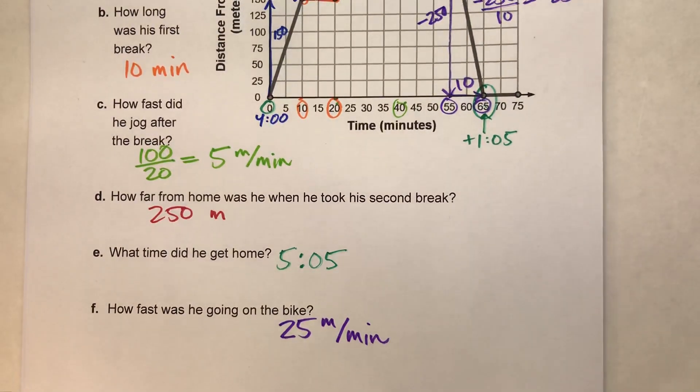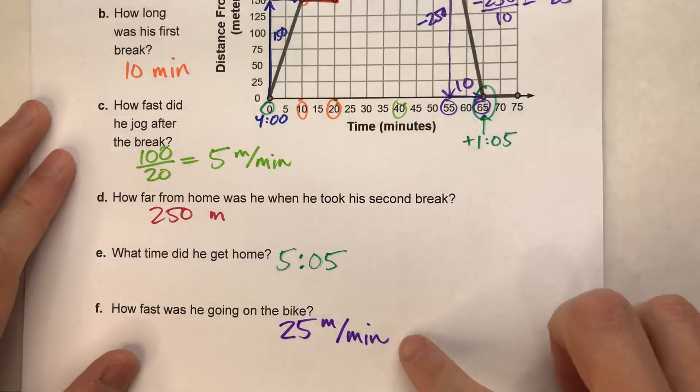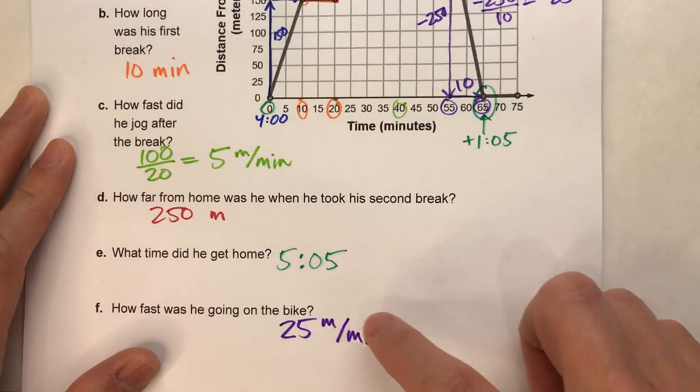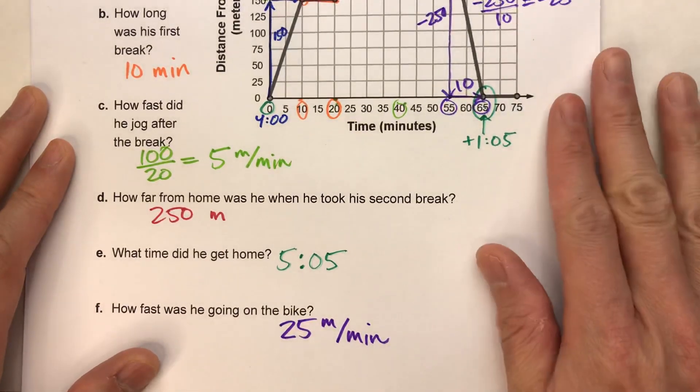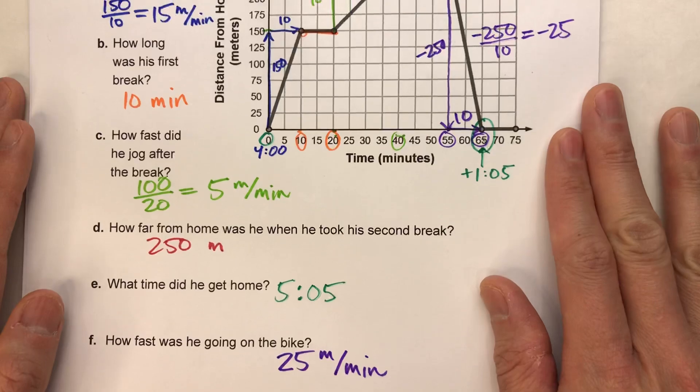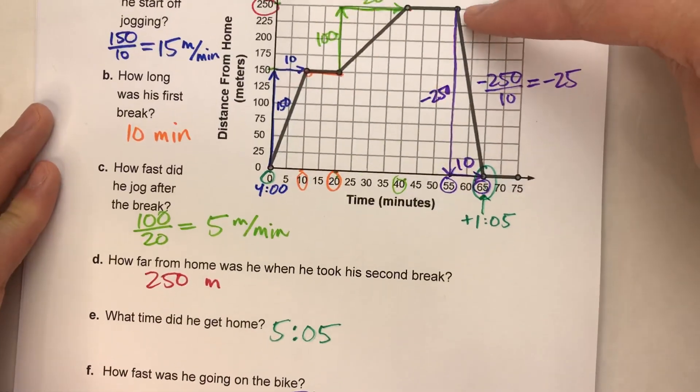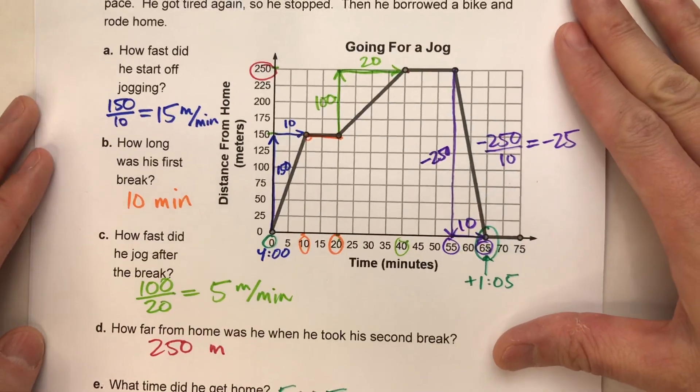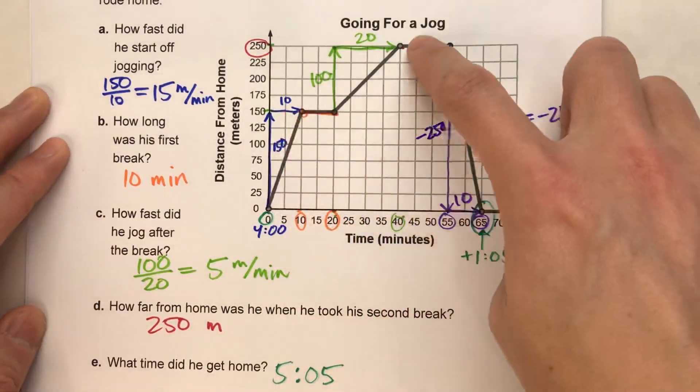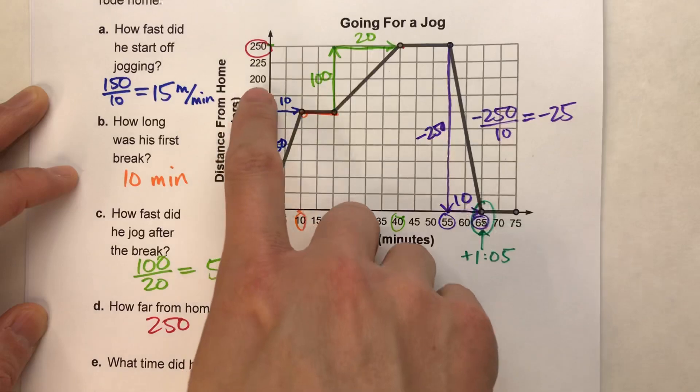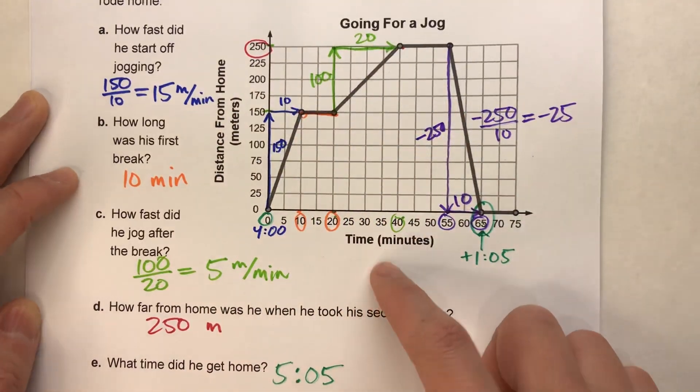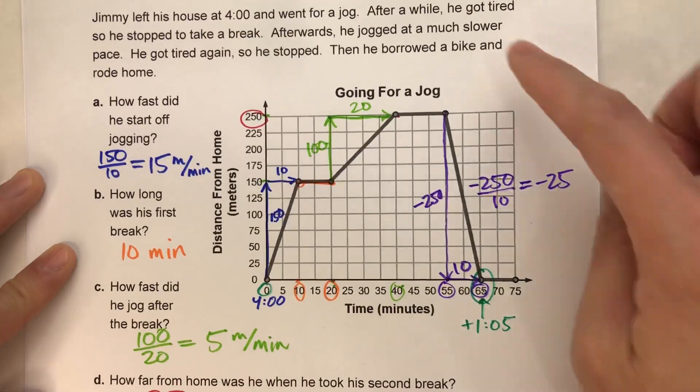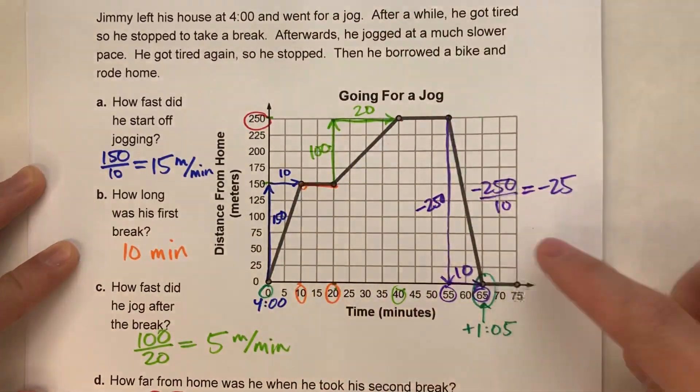Okay, so when it's asking about speed, it wants the positive amount because you can't go a negative meter per minute. But what it represents in our graph because it's negative is that the distance from home is decreasing. Okay? So the key to all of this is finding slope, finding y-intercept, finding the location of points on the graph. See, it's all about being able to read the graph and also being able to interpret the story to match up with that graph.